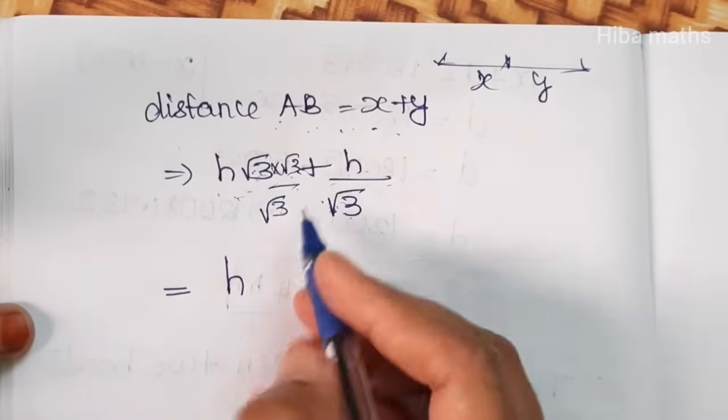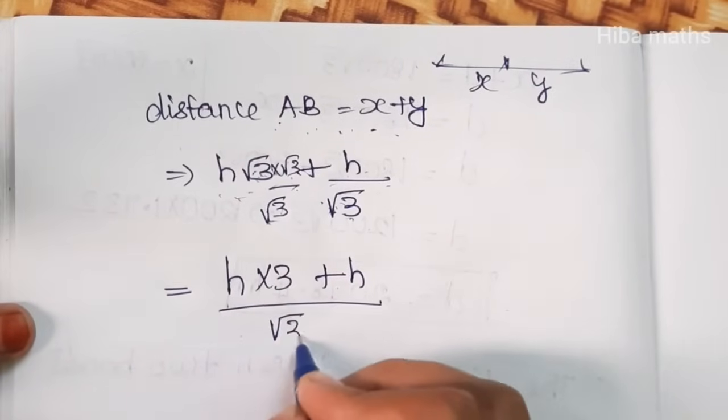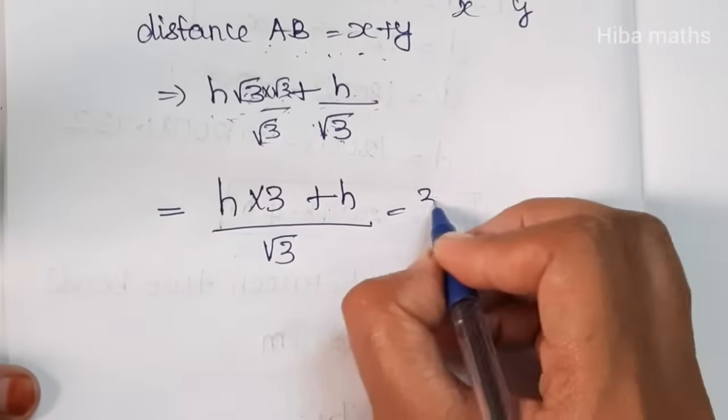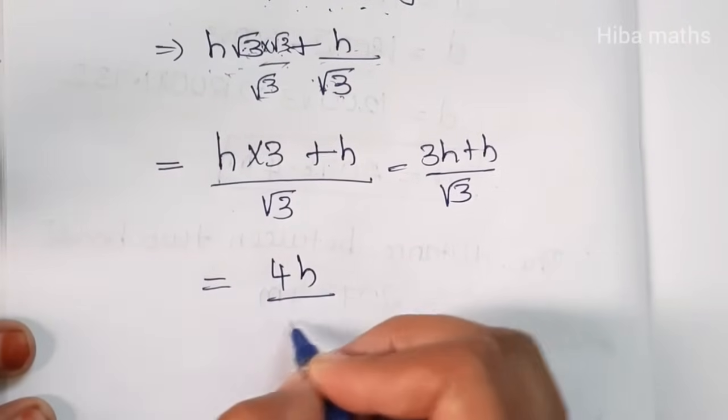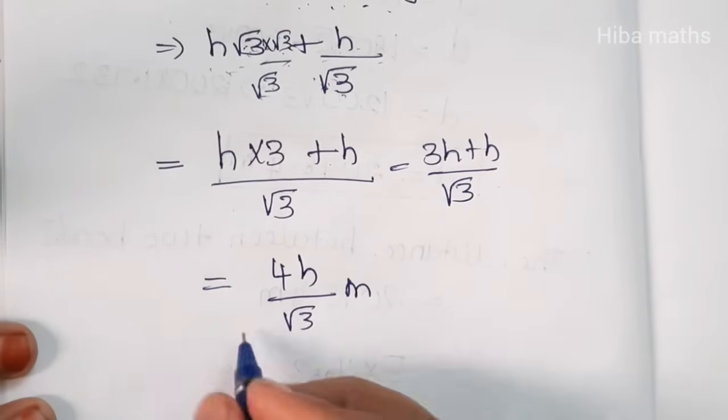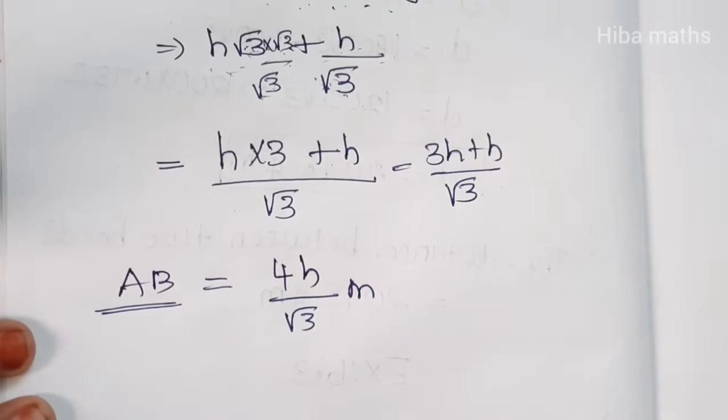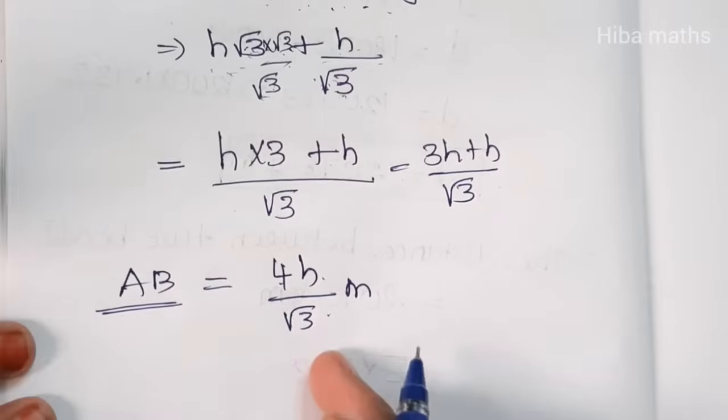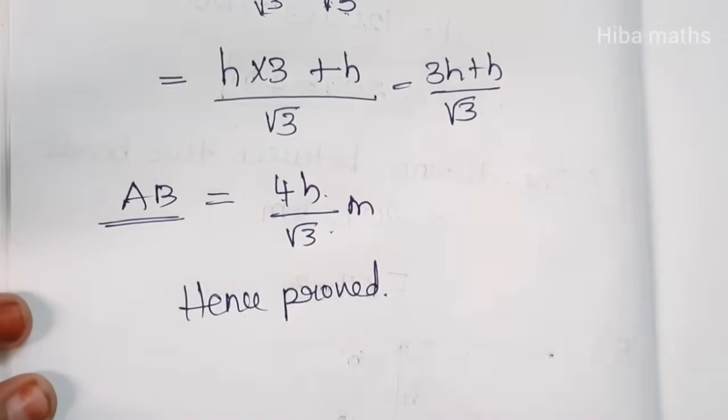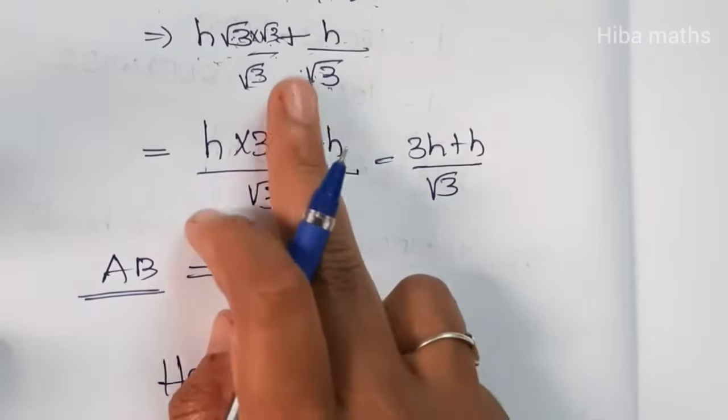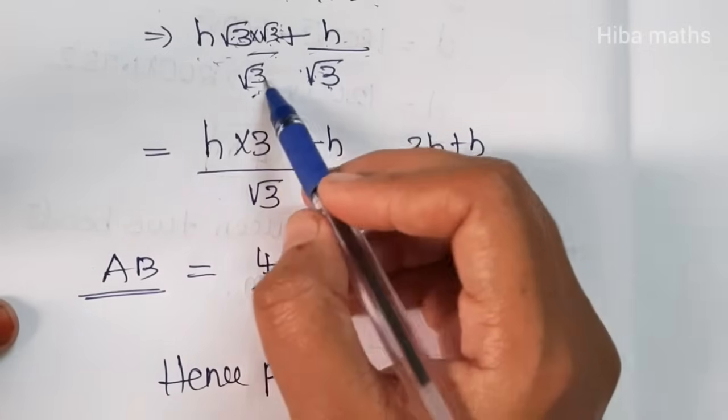Taking LCM and simplifying: h root 3 plus h by root 3 equals h times root 3 squared plus h, all over root 3. This equals 3h plus h over root 3, which equals 4h over root 3. Rationalizing by multiplying root 3 in numerator and denominator gives us the final answer.